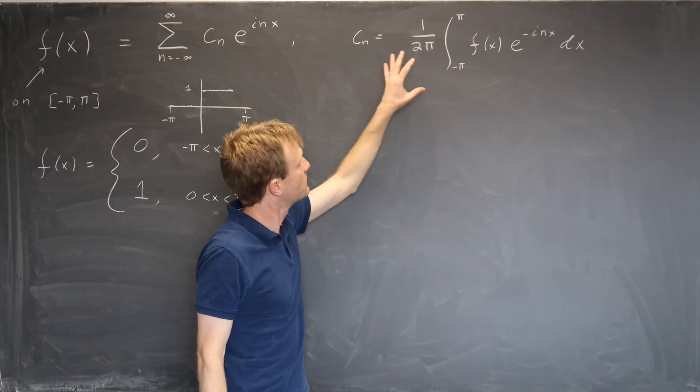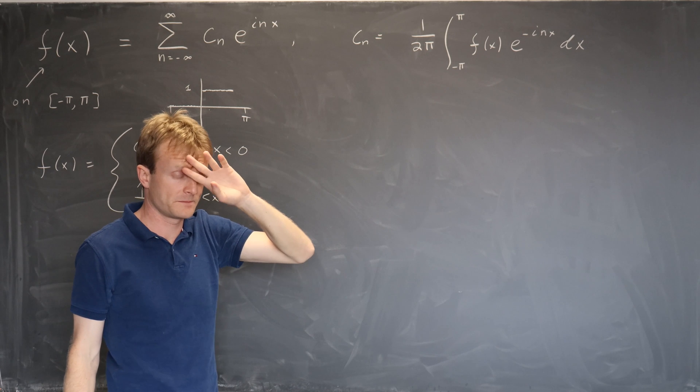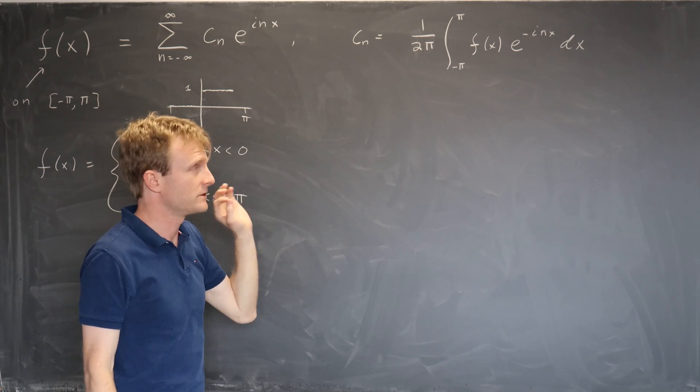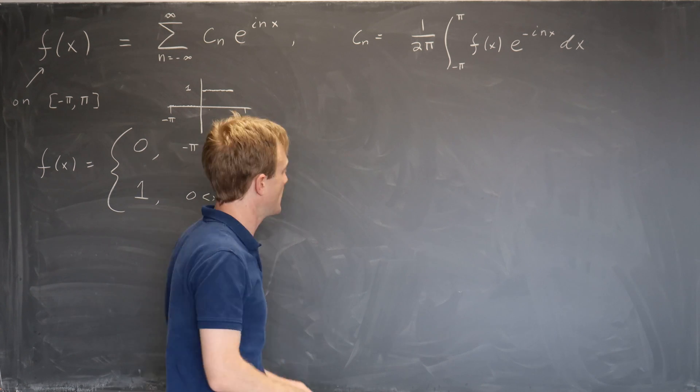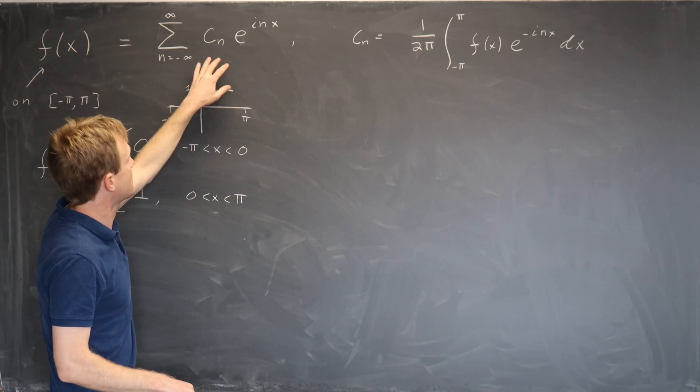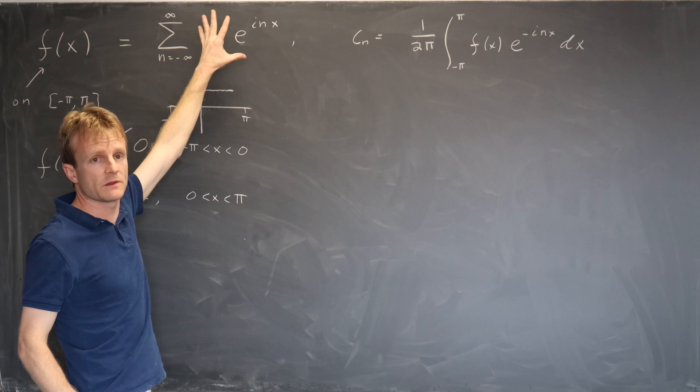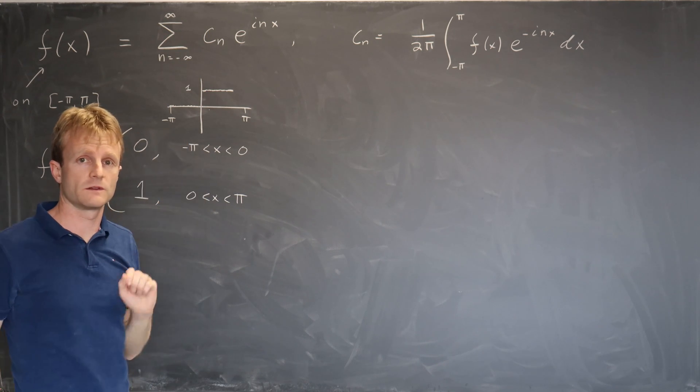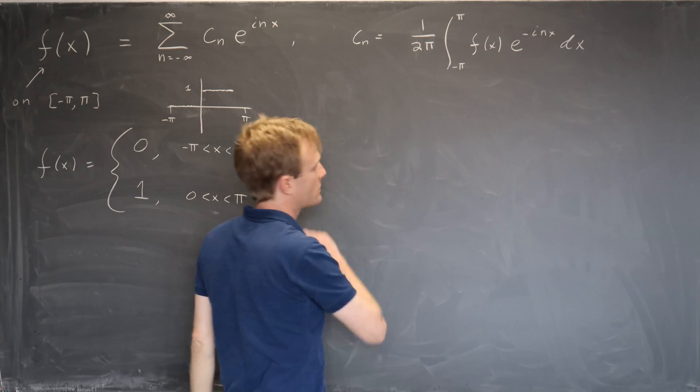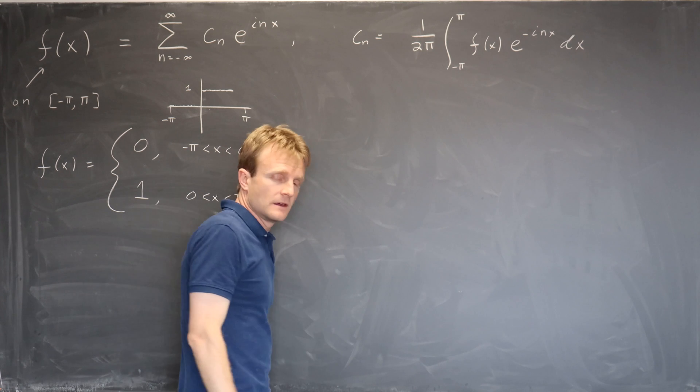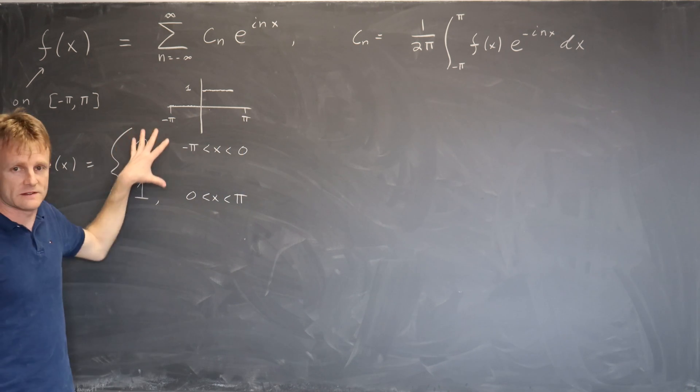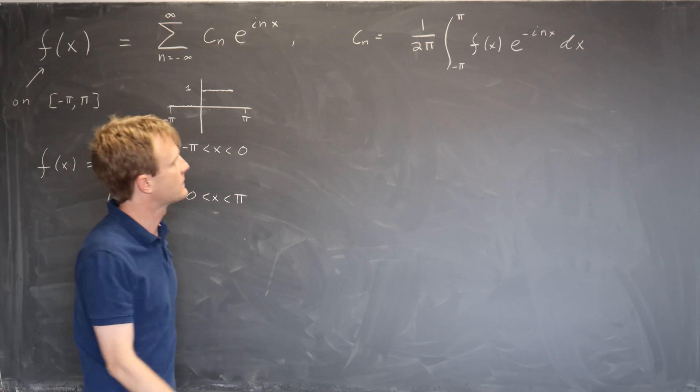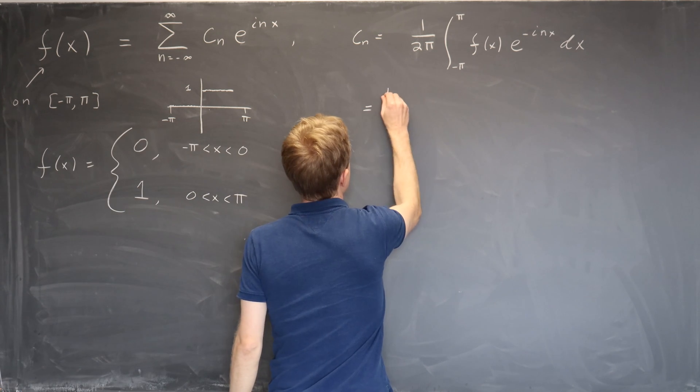So there are two steps. The first is to do this integral. It's straightforward, but you have to be careful, there are a number of pitfalls I'll point out as we go along the way. And then the second step is to re-express this complex thing in a manifestly real form.